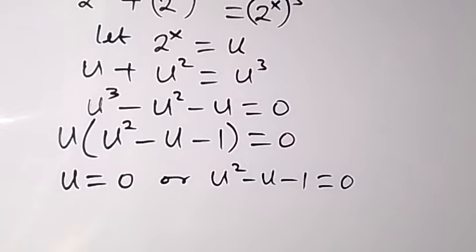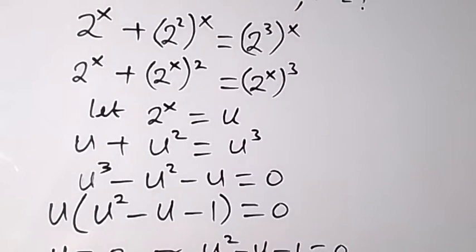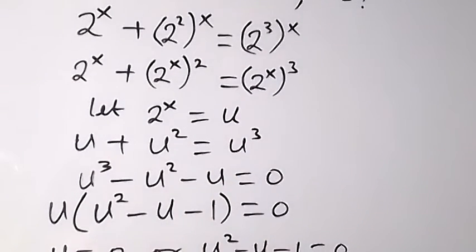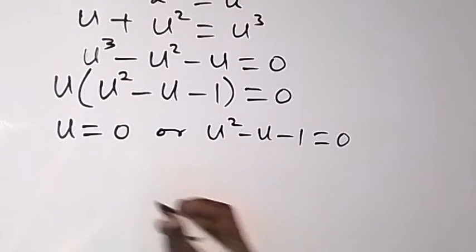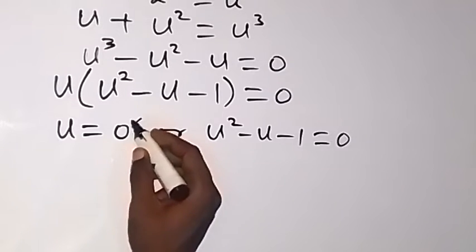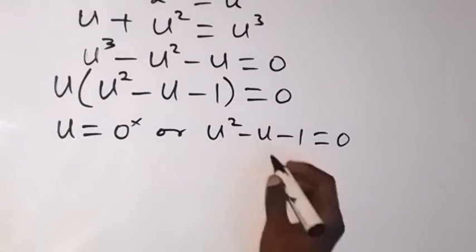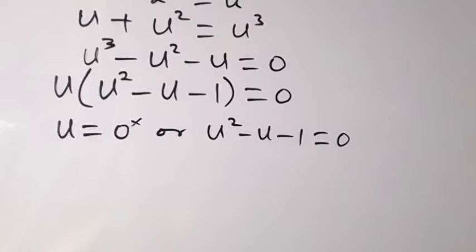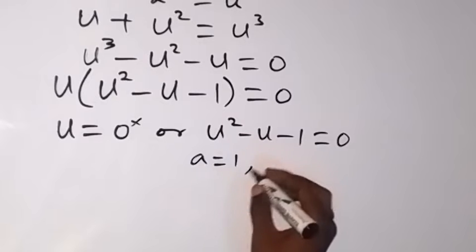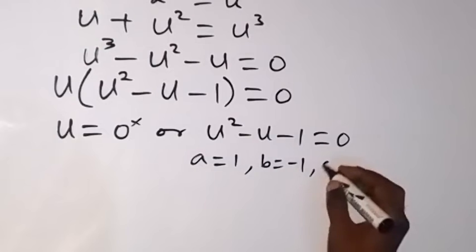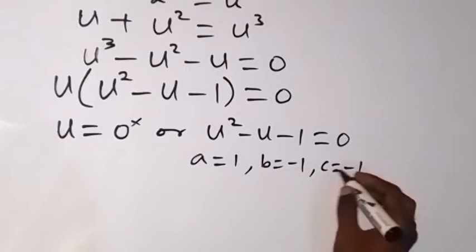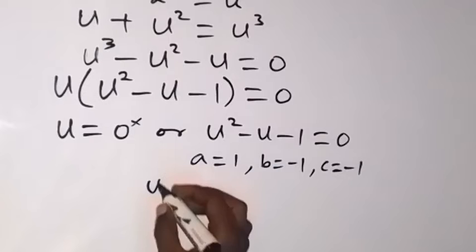Since we said our u is 2 raised to power x, that means zero here will not be a solution — so u equals zero will not be a solution. Let's solve this quadratic equation. From here, our a is 1, our b is minus one — the coefficient of u — and our c is minus one.